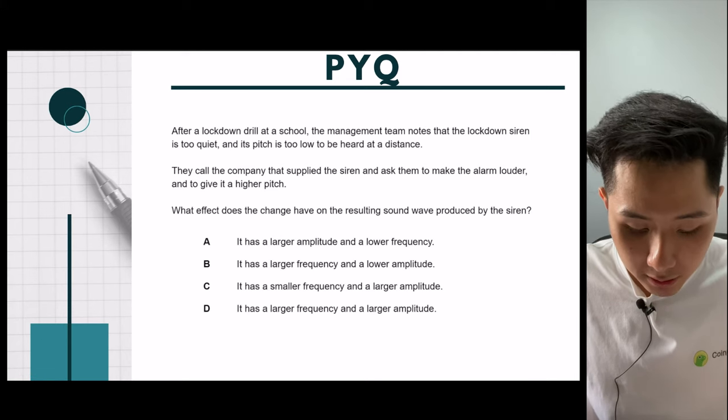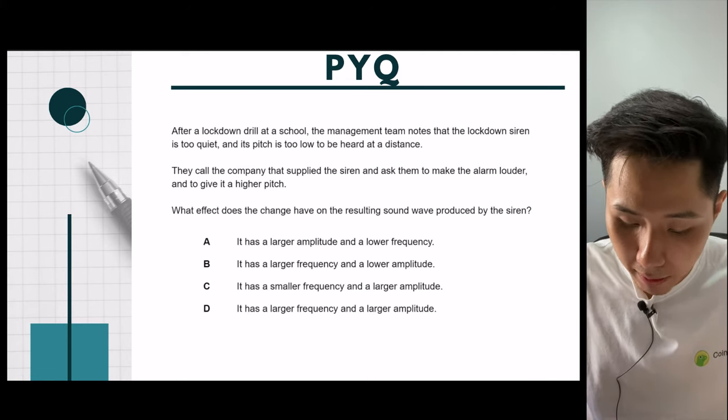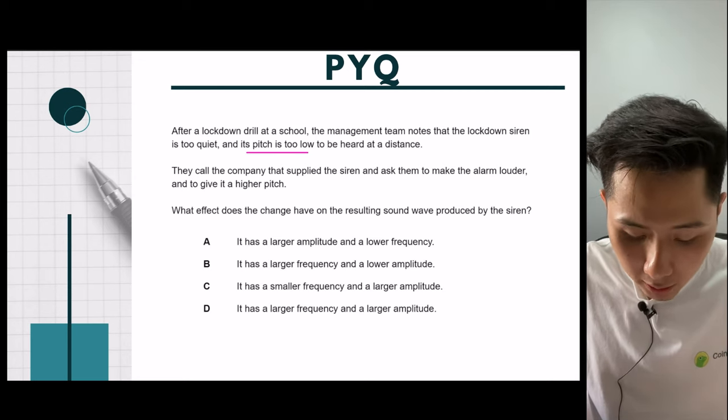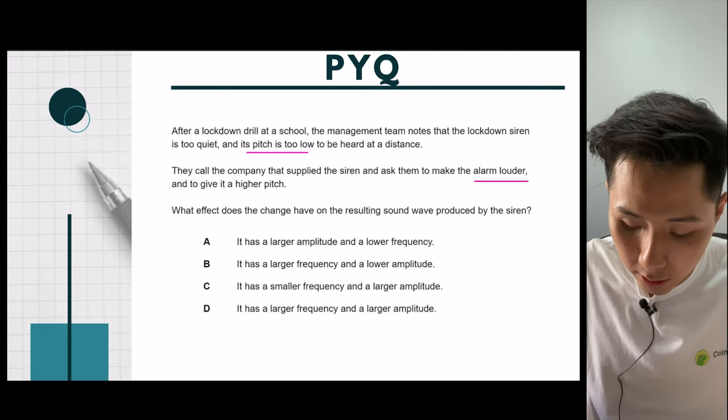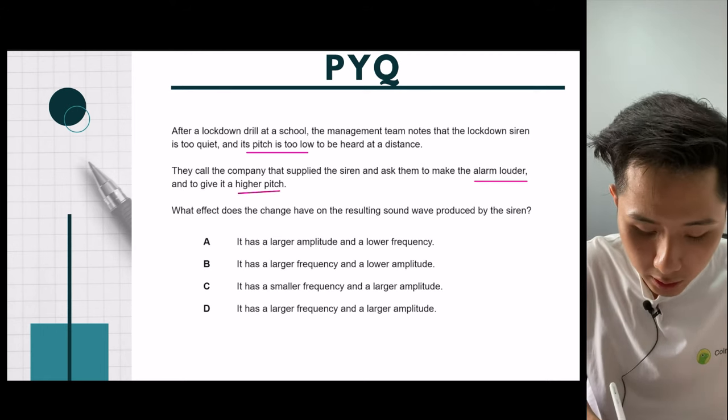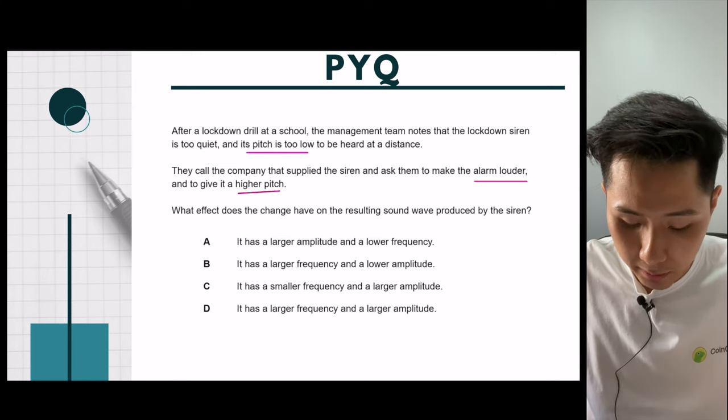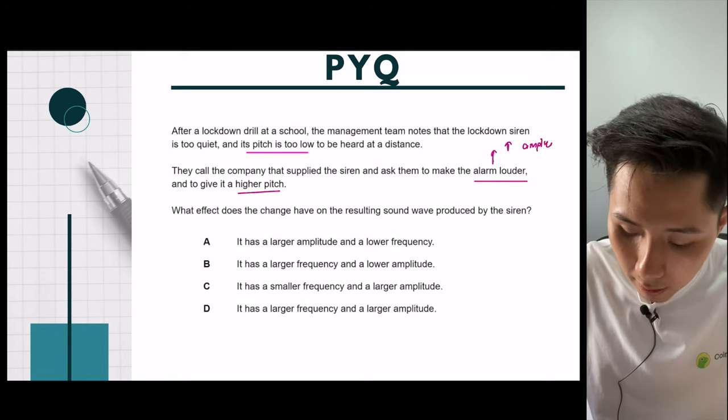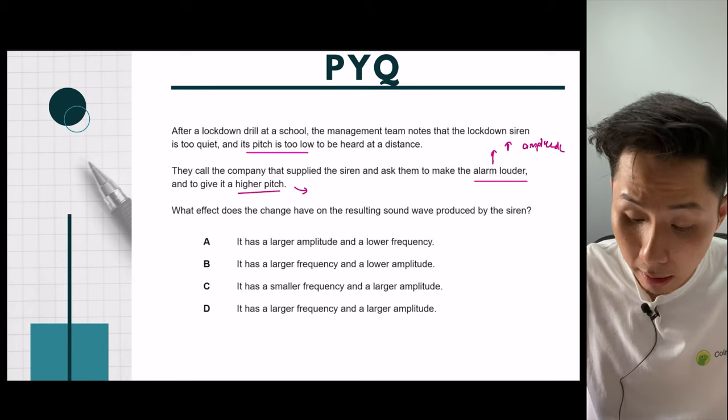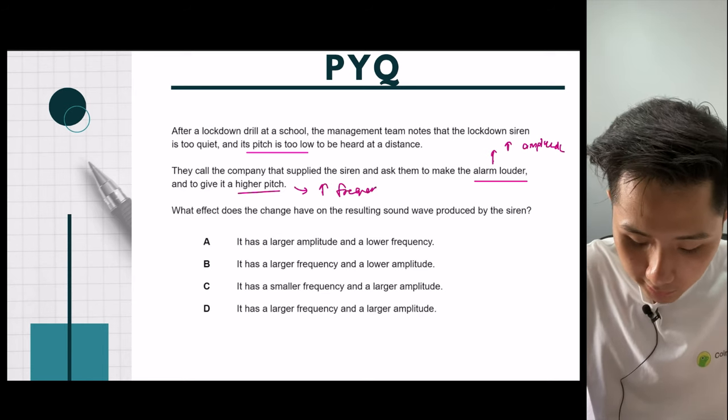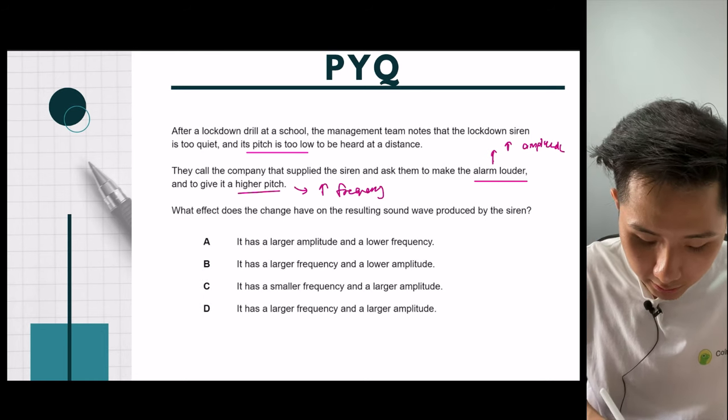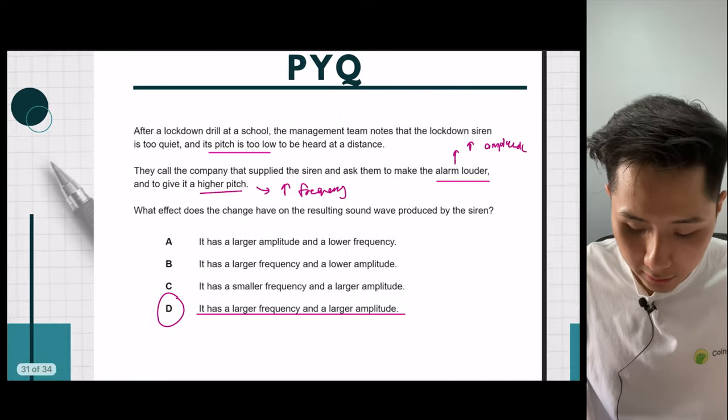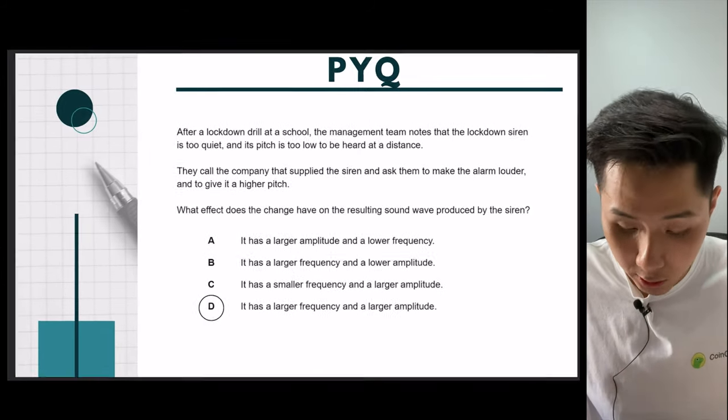Next one. After a lockdown drill at a school, the management notes that the lockdown siren is too quiet and the pitch is too low. They call the company to supply and ask them to make the alarm louder and to give a higher pitch. What effect has to be changed? We know that if you want it to be louder, you have to increase the amplitude. If you want it to have higher pitch, you need to increase the frequency. So our correct answer here will be D. It needs to have higher frequency and also high amplitude. If you look into the answer, it is correct, which is D.